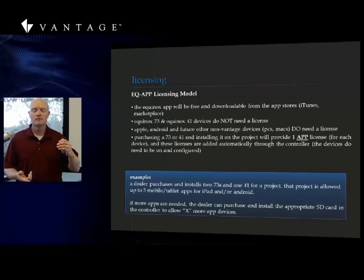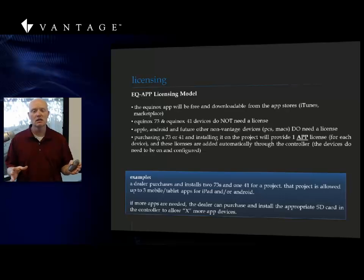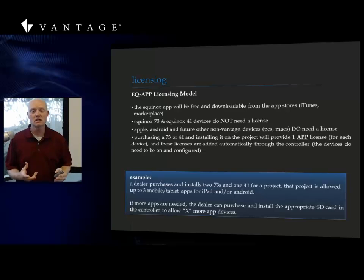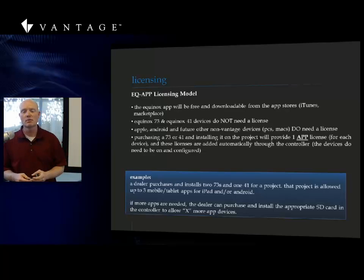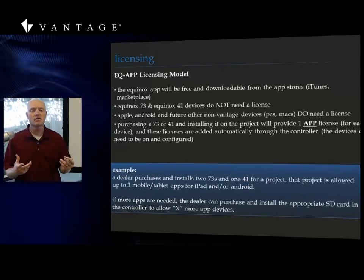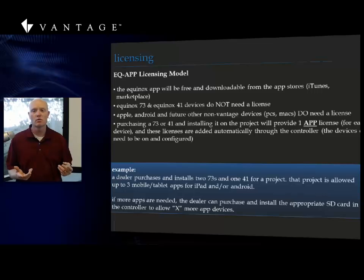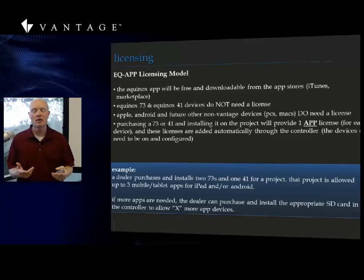The app is free and downloadable. The 7.3 and the 4.1 do not need any additional licenses — you buy the hardware from Vantage, they don't need any additional licenses. What does need licenses are all third-party touchscreens, tablets, smartphones, and things like that. For example, with two 7.3s and one 4.1, I've got three iPads, tablets, iPhones, or Android devices that could be on the system at any given time.